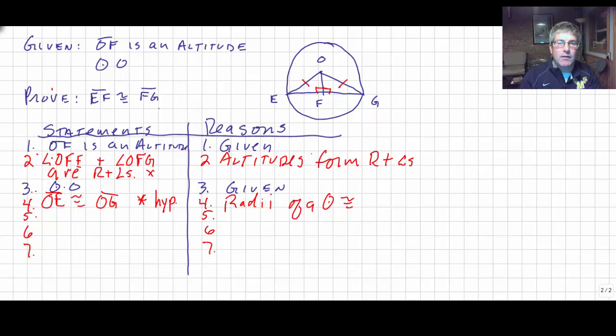Here are my right angles. And now, we also know our altitude here is common to both triangles. It's reflexive. So, OF is congruent to OF by reflexive.